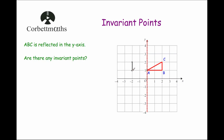So when we reflect triangle ABC in the y-axis, it will move to here. But as you can see — and if you're doing that in the test, make sure you're using a ruler — the point A has stayed in the same position, so that's an invariant point. So are there any invariant points? Yes, there is one invariant point and it's the point A. Because this shape was reflected and the point A stayed where it was, it's an invariant point.